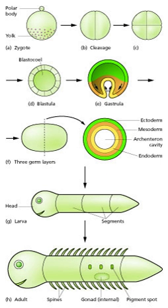Regional specification refers to the processes that create spatial pattern in a ball or sheet of initially similar cells. This generally involves the action of cytoplasmic determinants located within parts of the fertilized egg, and of inductive signals emitted from signaling centers in the embryo. The early stages do not generate functional differentiated cells, but cell populations committed to a specific region, defined by specific combinations of transcription factors.